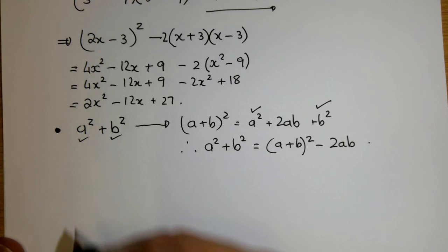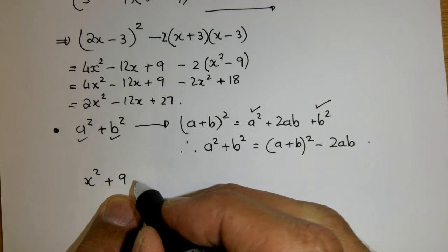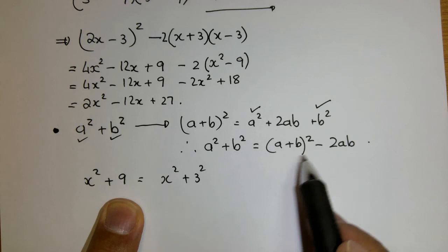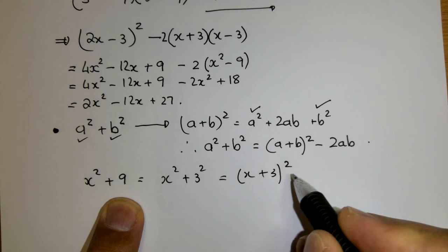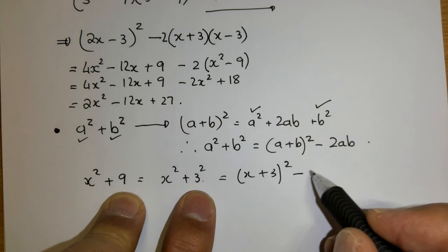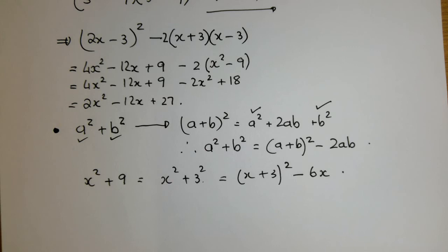Okay, so these are all called special results in products. We've looked at the sum of a binomial, if I square a binomial, and we've looked at the difference of two squares. We've also looked at the sum of two squares. Let me just show you where this is applicable. x squared plus 9, you'll agree with me, is equivalent to x squared plus 3 squared.